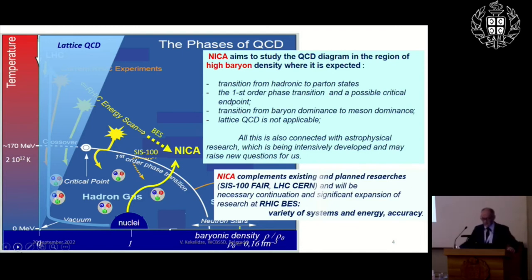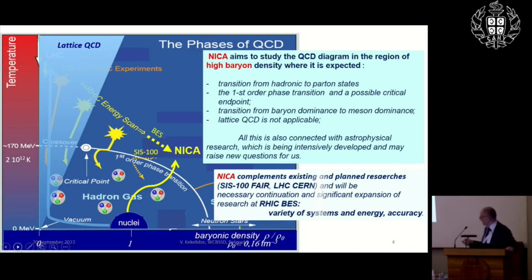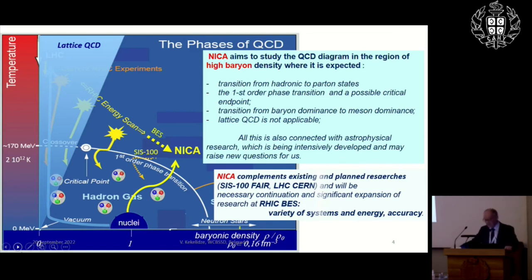High baryon density is also connected to astrophysical research, since it's expected in the cores of neutron stars — there may be similarities between what happens in neutron stars and the region of transition from hadronic gas to gluons. NICA complements existing and planned facilities including CBM-100 at FAIR in Germany and the LHC at CERN, and will be a significant expansion of research from the RHIC Beam Energy Scan, with a wider variety of systems and energies and much higher statistics.